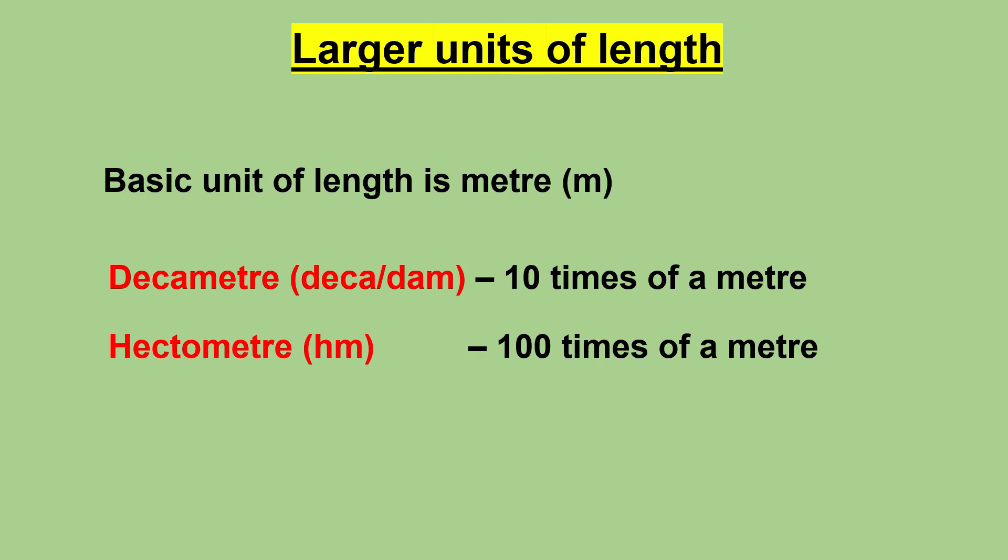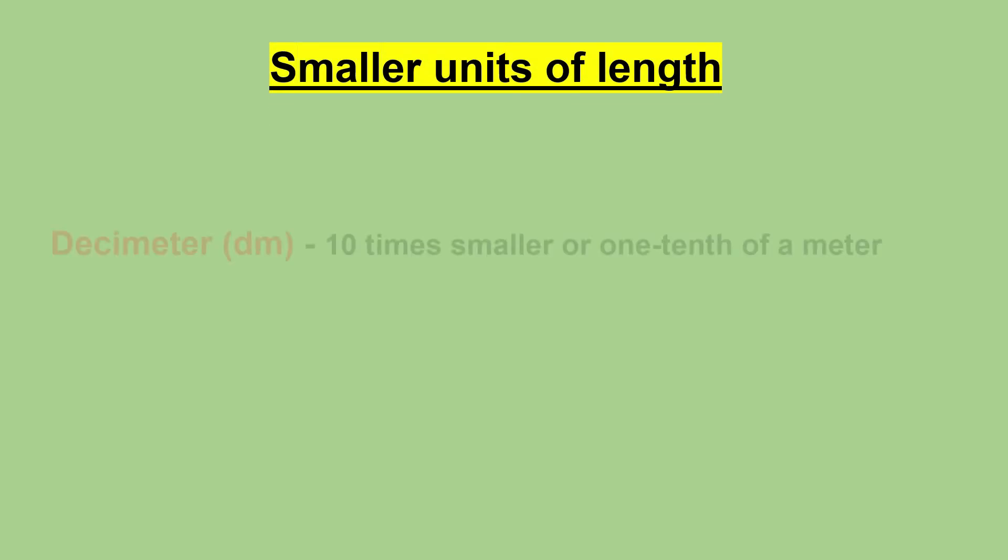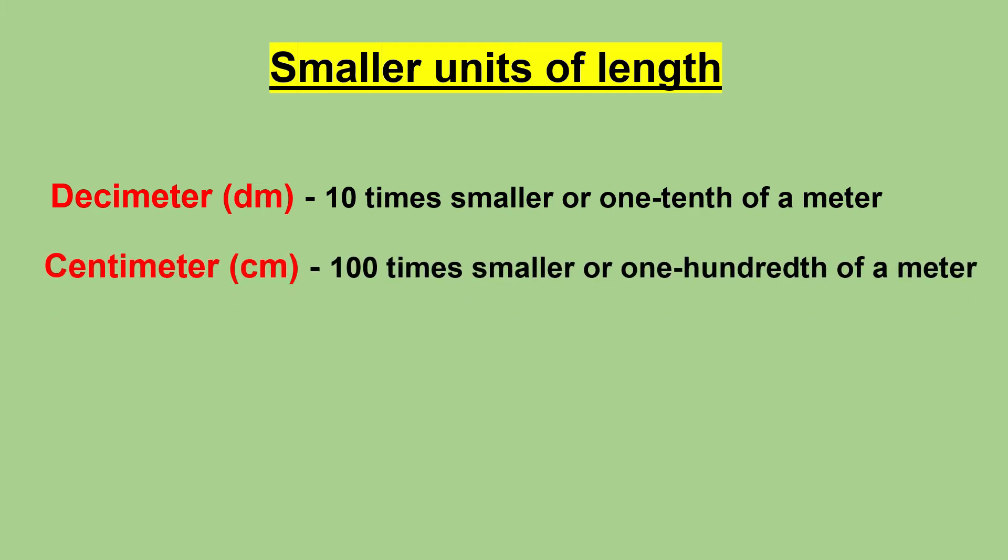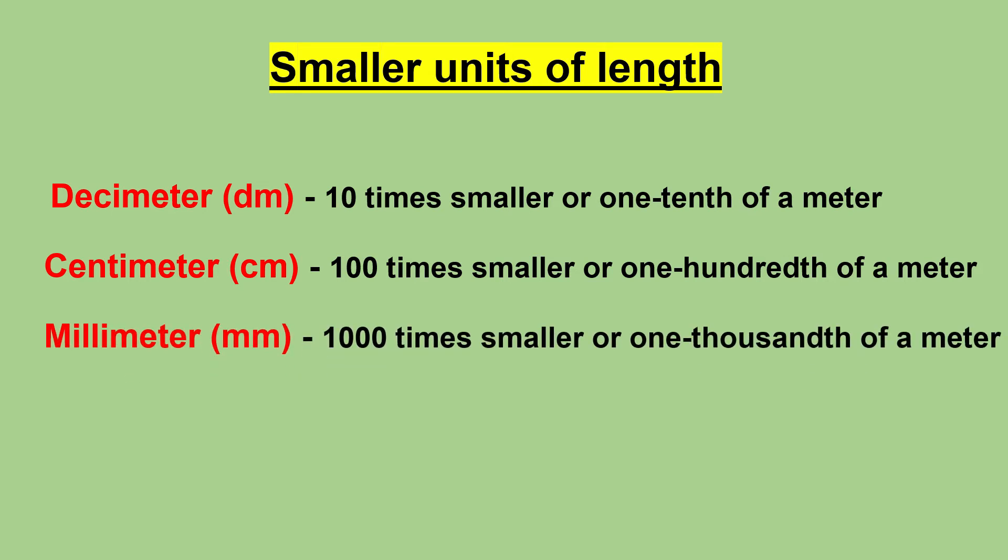But this system also has prefixes to define units smaller than a meter. The unit that is 10 times smaller, or one-tenth of a meter, is called decimeter or dm. The unit that is 100 times smaller, or one-hundredth of a meter, is called centimeter or cm. The unit that is 1000 times smaller, or one-thousandth of a meter, is called millimeter or mm.